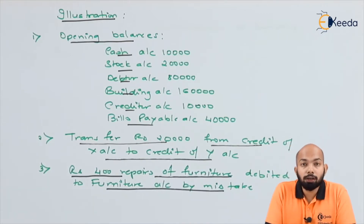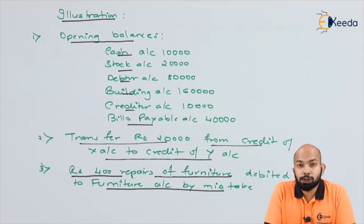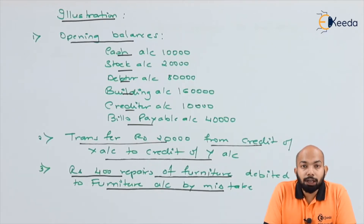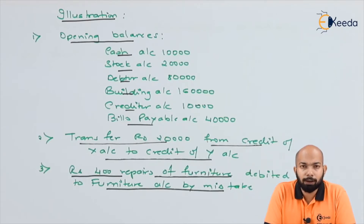The third transaction: rupees 400 which were ideally for repairs to furniture have been mistakenly debited to furniture account instead of repairs to furniture account. That means we have to pass a rectification entry there.